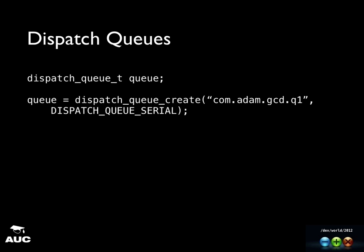So this is a dispatch queue — its type is dispatch_queue_t. One thing you'll notice in Grand Central Dispatch is most of the data types end with _t; it's just a convention Apple decided to use. To create a queue, you use the dispatch_queue_create function. You pass it a name — the convention is to use the reverse DNS naming scheme. Then you specify dispatch_queue_serial or concurrent. Serial means one block will be executed and taken off before the next one runs. With concurrent queues, they'll all be taken off and attempted to execute at the same time.